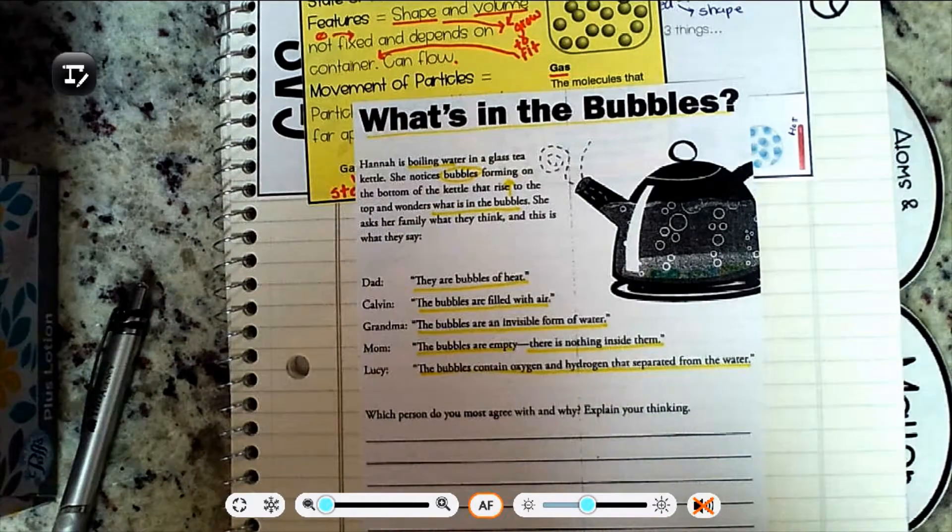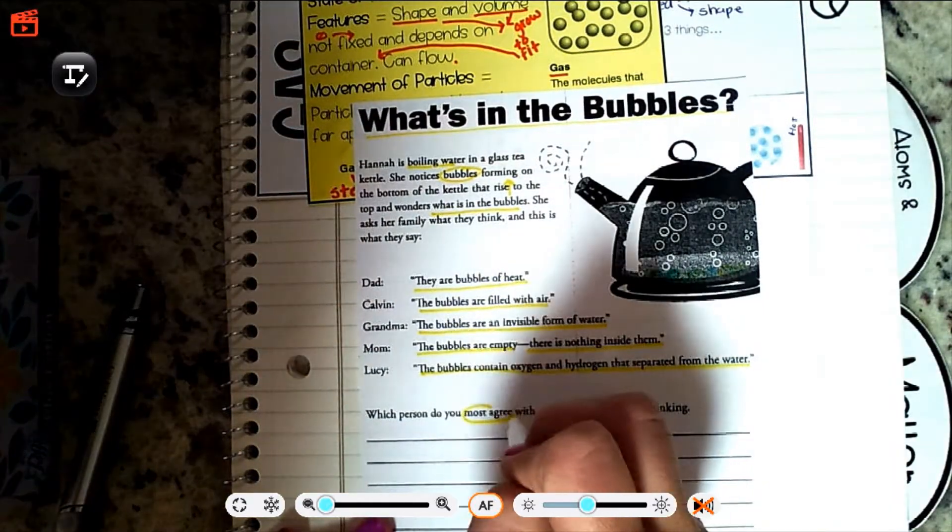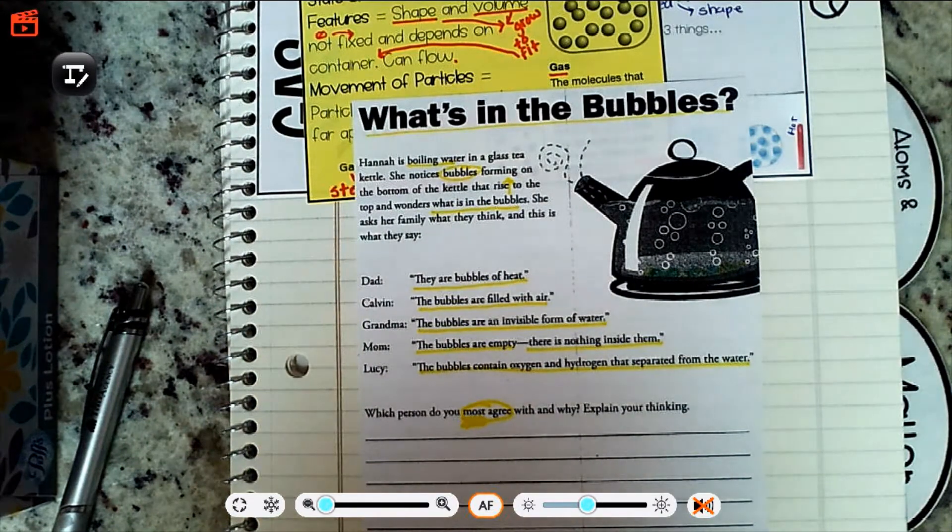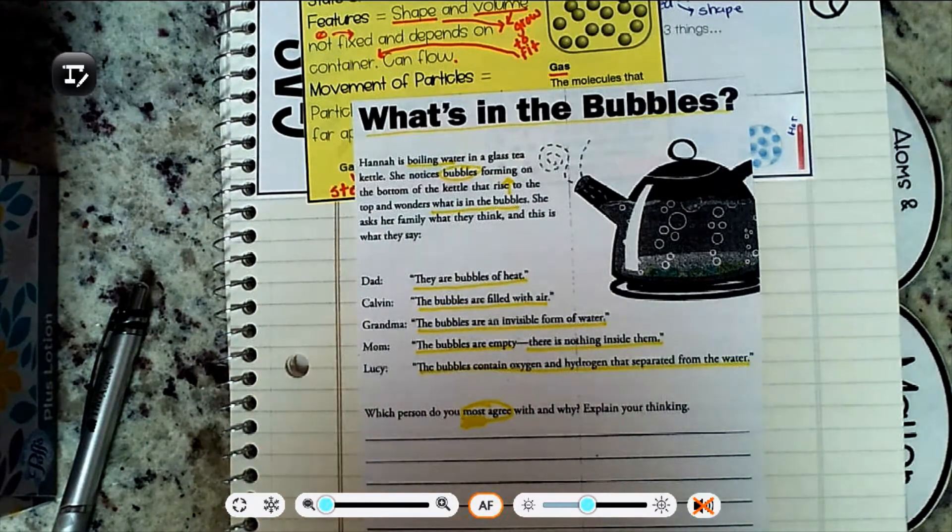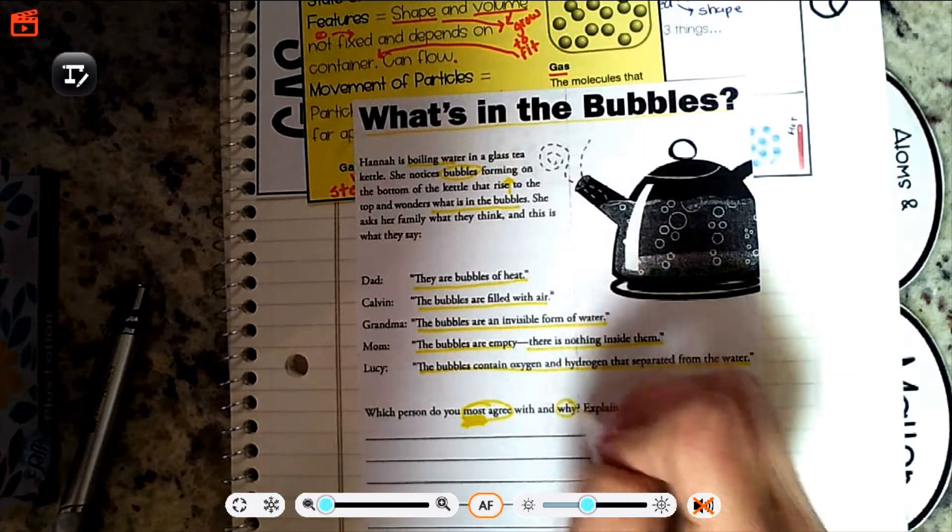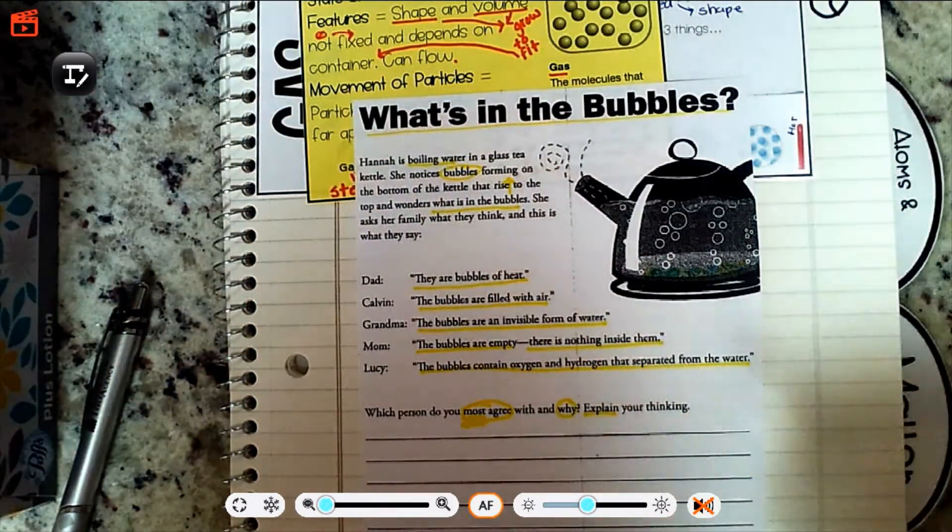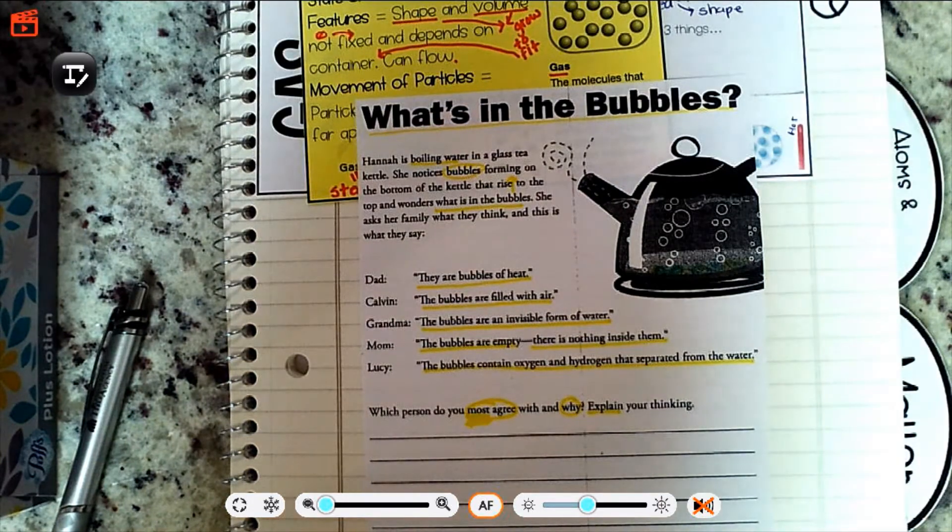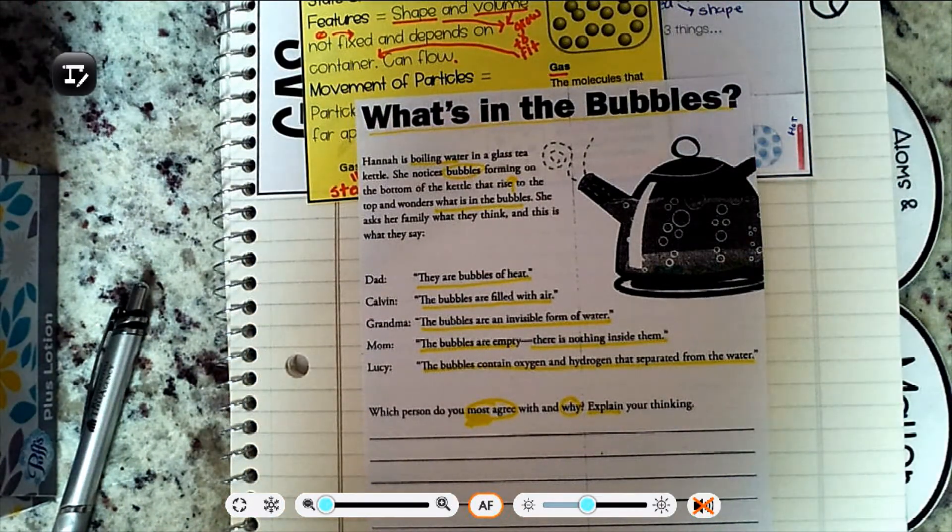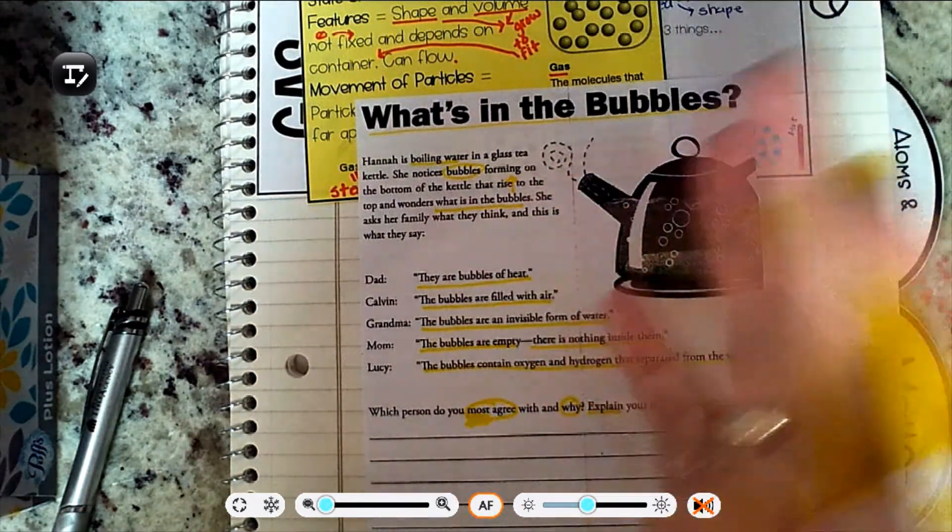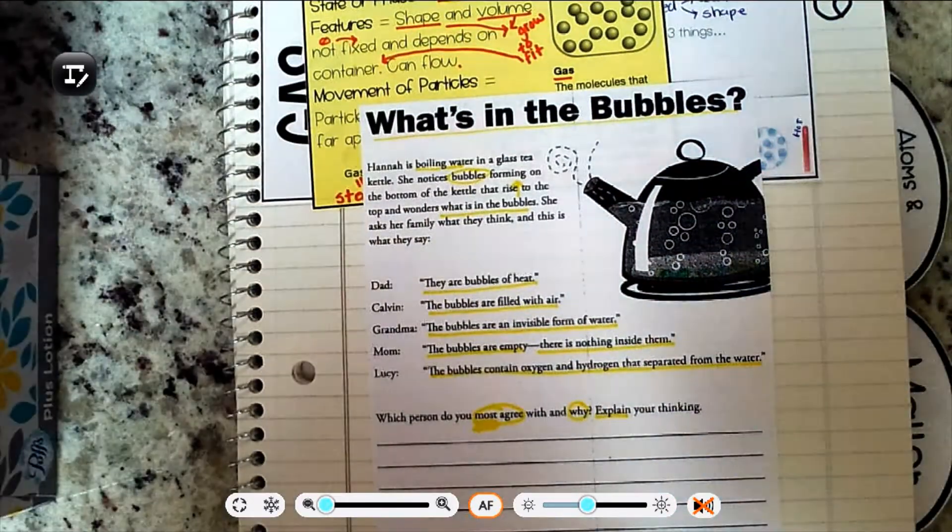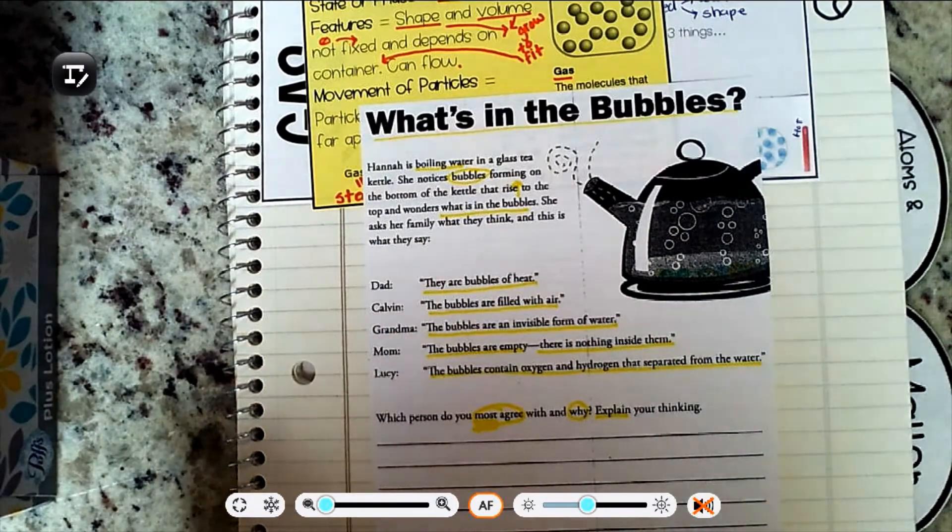Which person do you most agree with? Most means you maybe don't agree with everything they say, but you agree with some of it. And why? Explain your thinking. If your answer is mom, how many points do you think you're going to get on this? I think we've got zero because I want to know which person and why. You're going to say, let's start our sentence and I'll help you get it started.